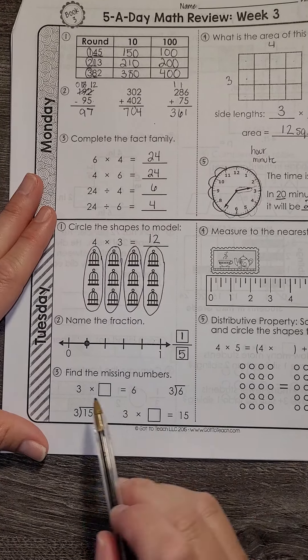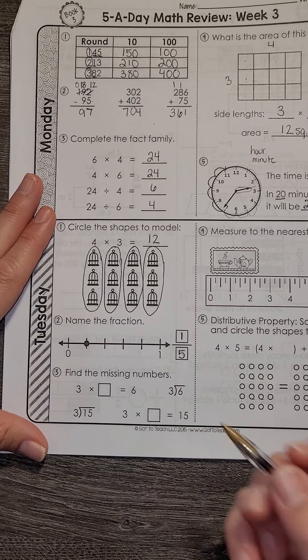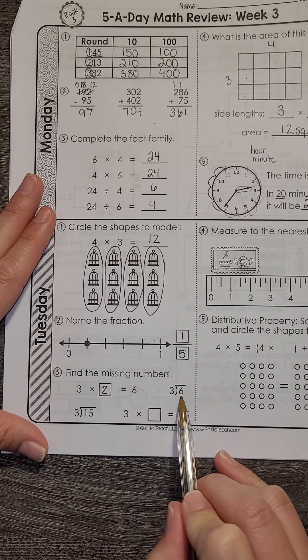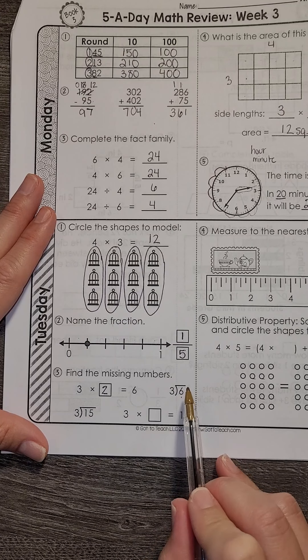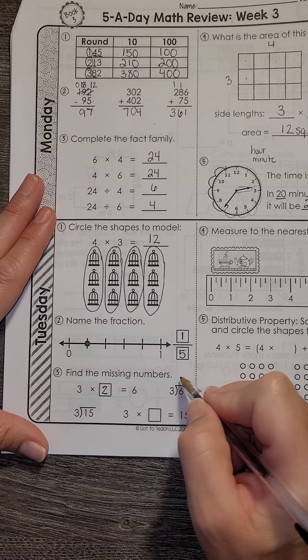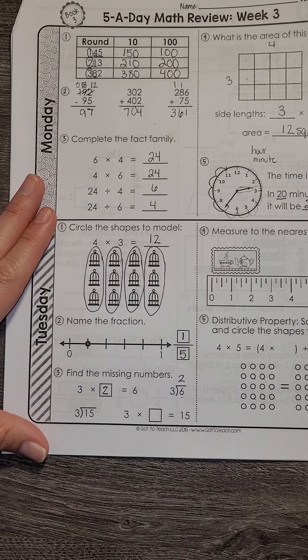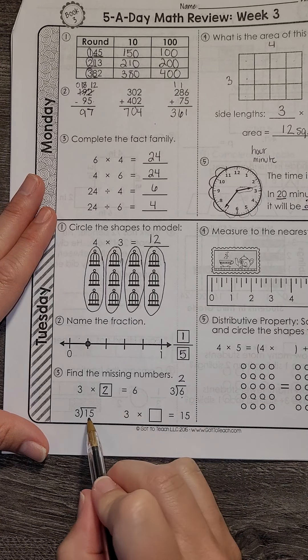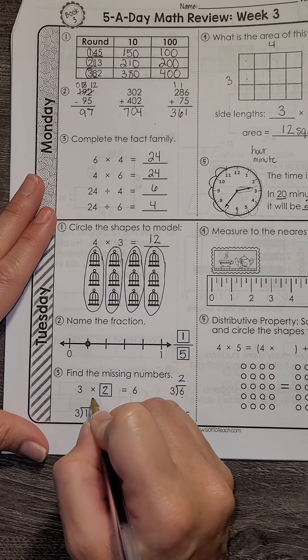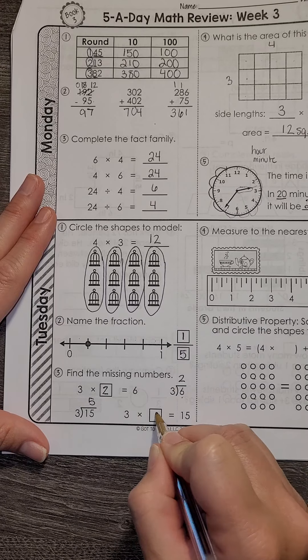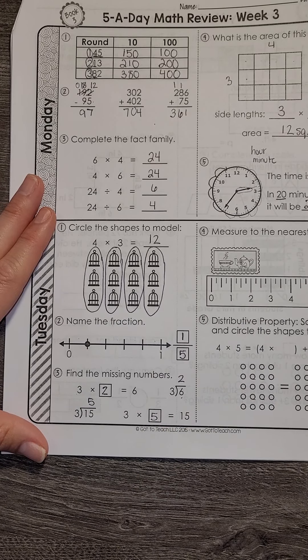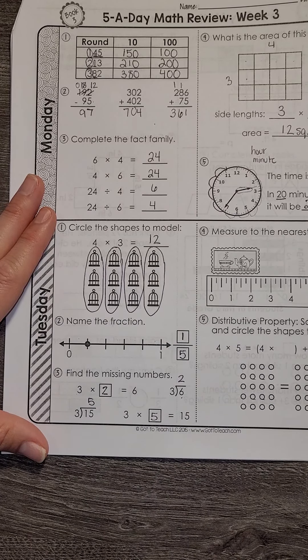Find the missing numbers. What times 3 is 6? That would be 2. Remember, this is another way to write division. So what is 6 divided by 3? And that is also 2. 15 broken into three groups is 5. And 3 times 5 is 15. So there is some fact families here also.